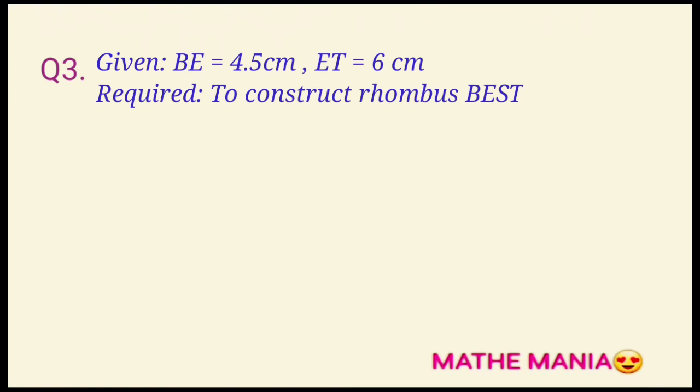In the next question we are only given BE and ET and we have to construct rhombus BEST. Why are we given only two measures? That's because a rhombus is a quadrilateral in which all the sides are equal.